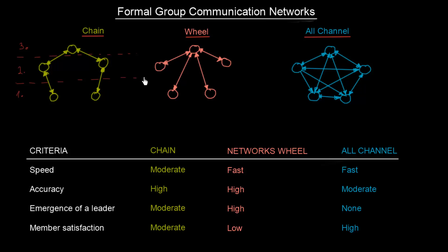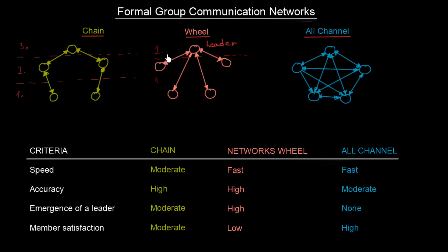Now let's go to the wheel. Within the wheel communication network, you can see that all of the group members are communicating with one central person — this should be some sort of a leader. If we imagine the hierarchical levels here, it seems like there will be only two of them: the first hierarchical level and the second one.